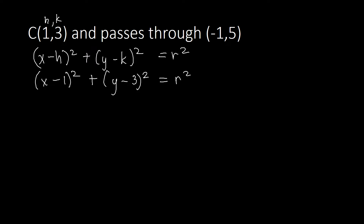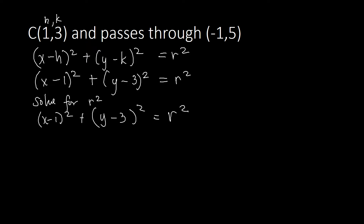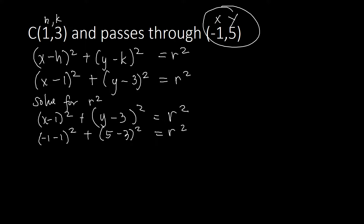We don't have the radius, so we need to find that. We need to solve for r² because we cannot write our standard equation of the circle without r². So we'll be utilizing the equation (x - 1)² + (y - 3)² = r², plugging in the point where x = -1 and y = 5.